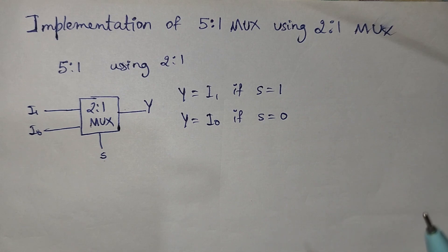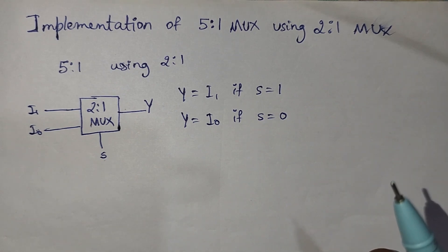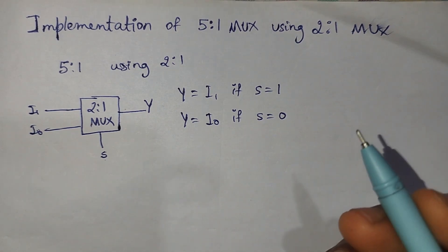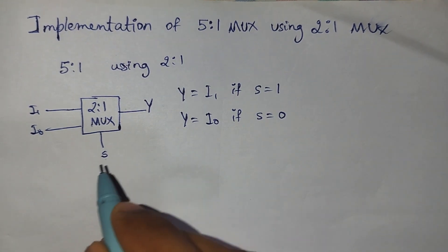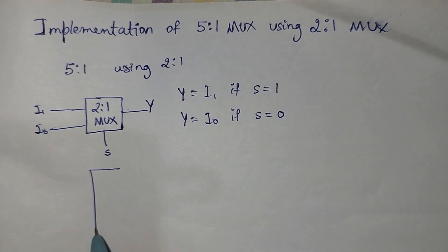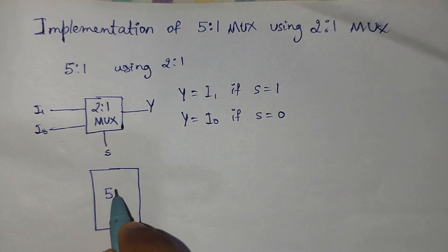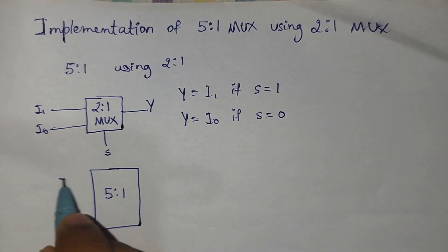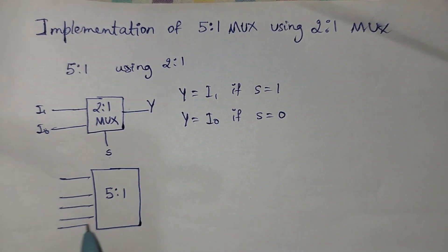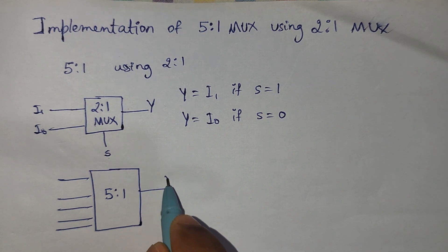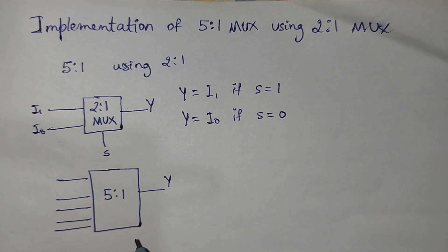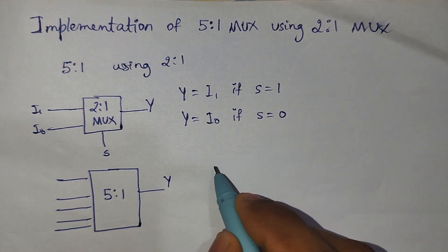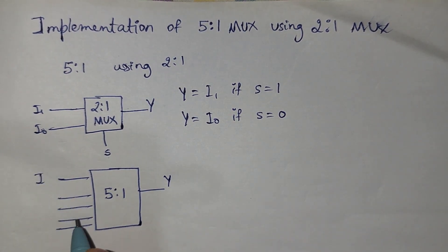In this problem, we have to design a 5-to-1 mux using 2-to-1 muxes. In a 5-to-1 mux, we have 5 input lines and 1 output line. Now we have to find how many control signals are needed for our design, since there are 5 input lines.